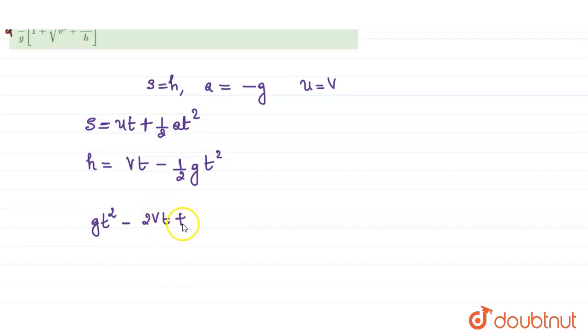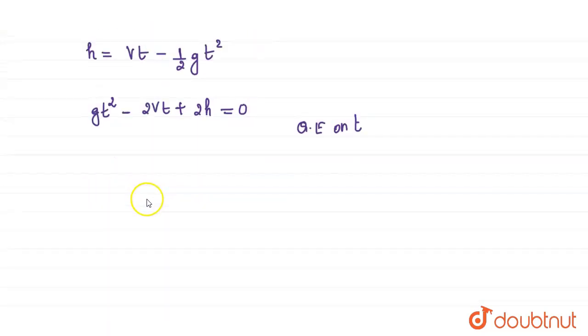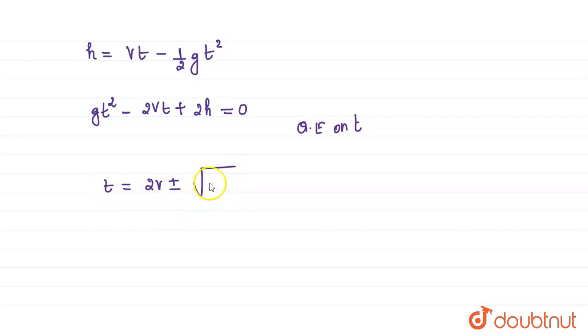This is a quadratic equation in t. We can find the value of t using the discriminant method. t equals minus b, that is 2v, plus or minus root of b squared, that is 4v squared, minus 4 times a, which is g, times c, that is 2h.